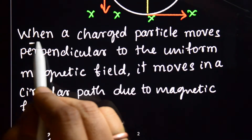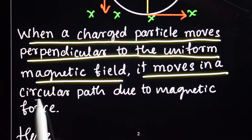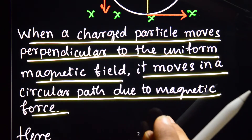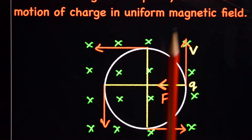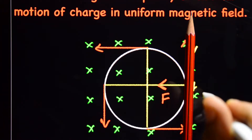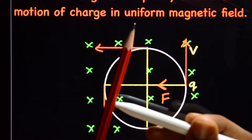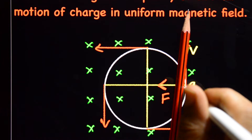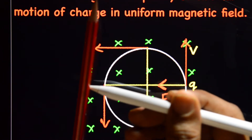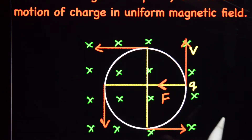When a charged particle moves perpendicular to the uniform magnetic field, it moves in a circular path due to the magnetic force. This is a charged particle Q, and its motion is tangential. The angle between the direction of motion and the magnetic field is 90 degrees. When this angle is 90 degrees, the particle performs circular motion.